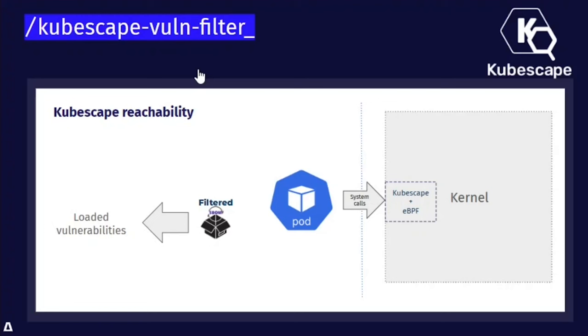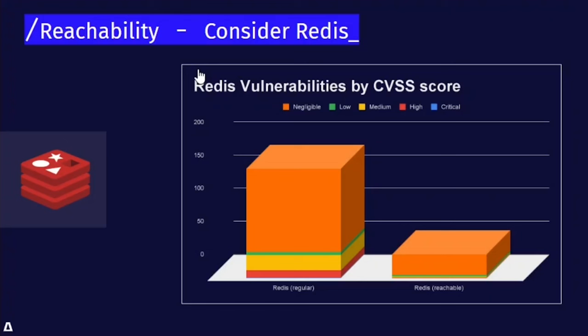Cubescape feeds the vulnerability scanner with the original SBOM that naive scanners use and with a filtered SBOM it created. The filtered SBOM only lists the packages that were touched during runtime, giving the scanner that precious runtime information. In the proof of concept for reachability, ARMO researchers ran a scan with and without reachability on a Redis image. Running a vulnerability scan on the Redis image identified 166 vulnerabilities, but when looking through the lens of reachability the number shrinks to 36, which represents a 78% reduction.